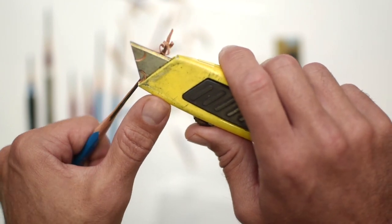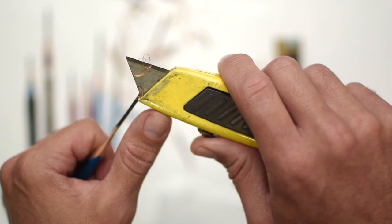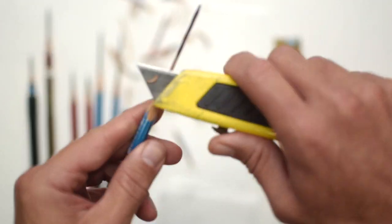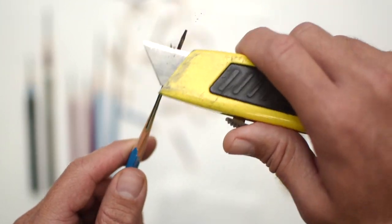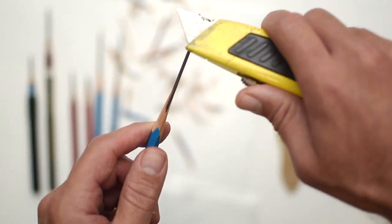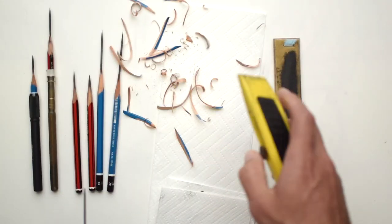By the time you get down to the inside core of the wood around the shaft, you'll meet some gummy residue that's used for holding the wood securely around the graphite. Just carefully remove this with the blade gently.